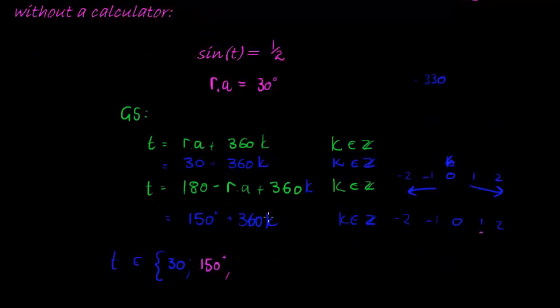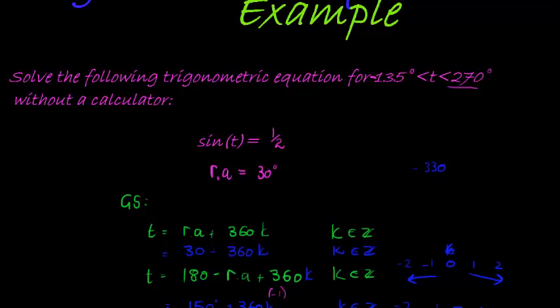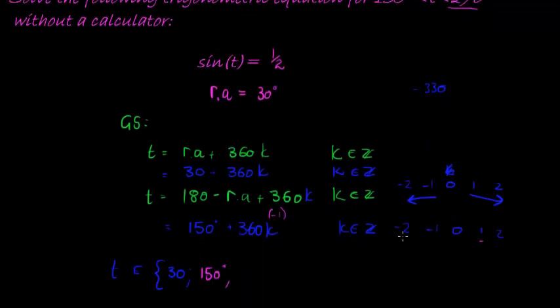Let's go smaller. Let's subtract 360. So if I subtract 360, I get negative 210. So I'm doing it in my head. So all I did was to replace k with negative 1. And if I do that, I get 210. Negative 210 is too small. The smallest I'm allowed is 135. So these are my two solutions.